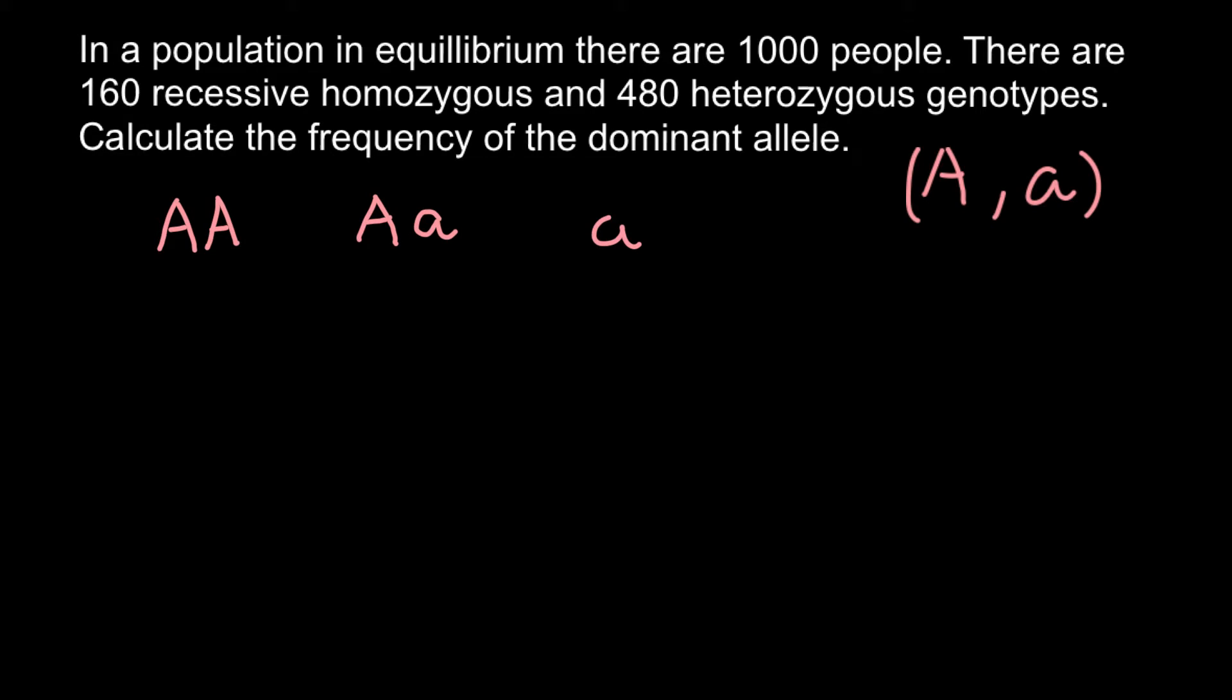We are told that we have 160 individuals who belong to the homozygous recessive genotype, 480 who belong to the heterozygous genotype, and we are not told how many people belong to the homozygous dominant genotype, but this is very easy to find.